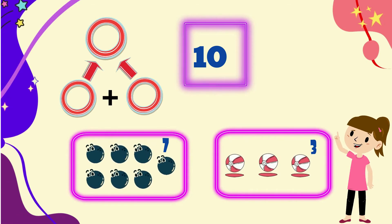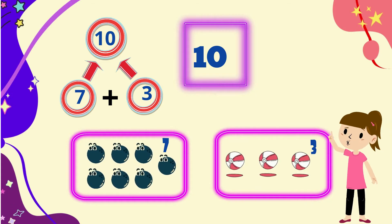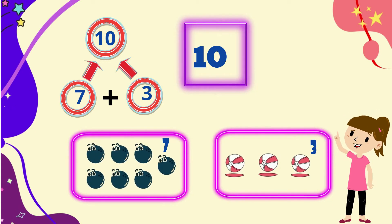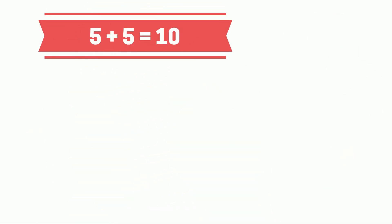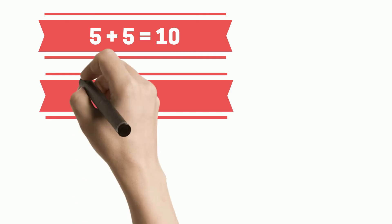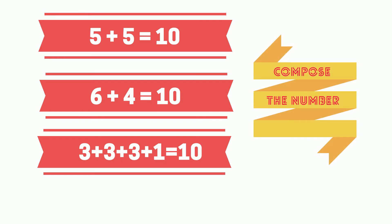So this tells us that seven and three make the number ten. There are many other ways of composing the number ten. For example, five and five make the number ten, or six and four make the number ten, or three and three and three and one make the number ten. Why don't you pause the video and try to compose the number ten? When you come back, we will start learning how to decompose numbers.